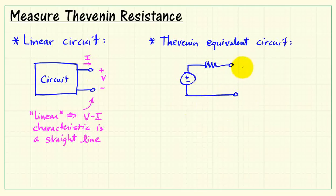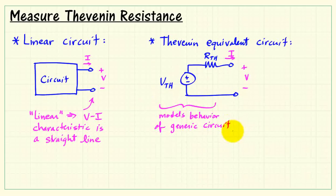The Thevenin equivalent circuit at the terminals has a Thevenin voltage source VTH and a Thevenin equivalent resistance RTH. These two circuit elements model the behavior of the generic circuit.